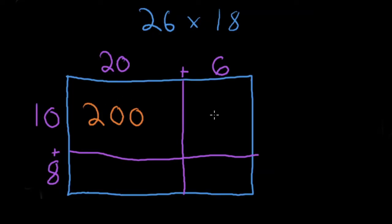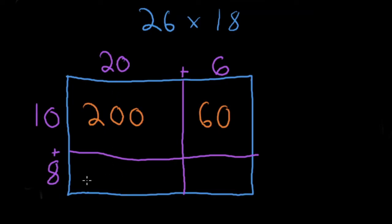Keep going — touch 10, times, touch 6: 10 times 6 is 60. Now for the 8: touch 8, times, touch 20 — 8 times 20. I don't have my 20 times tables memorized, but I know 8 times 2 is 16. Attach one zero, and that gives me 160.